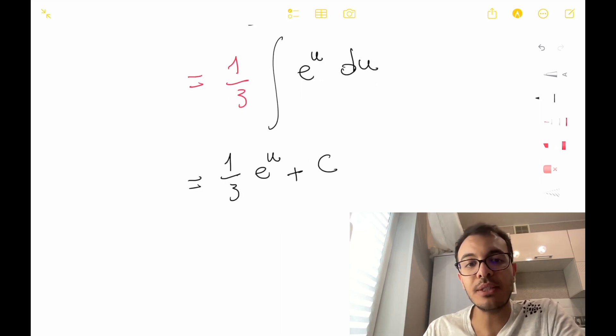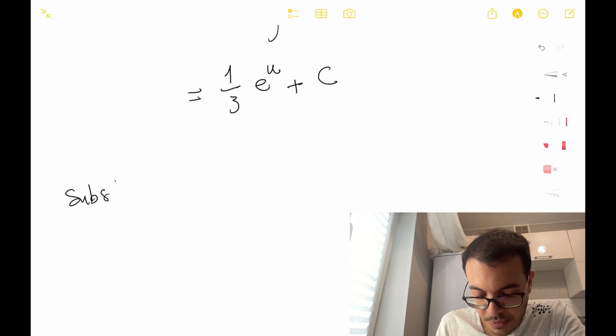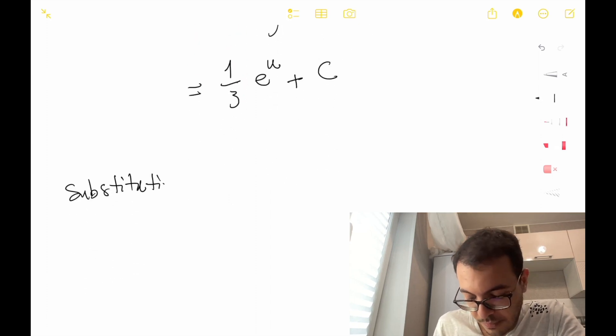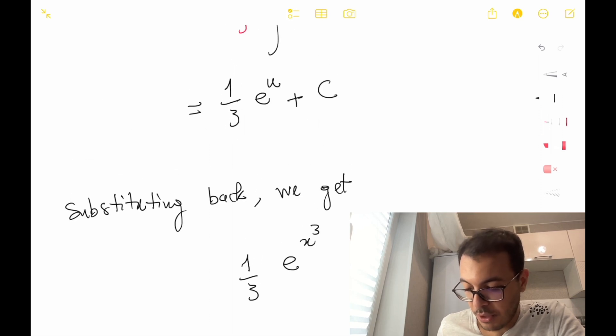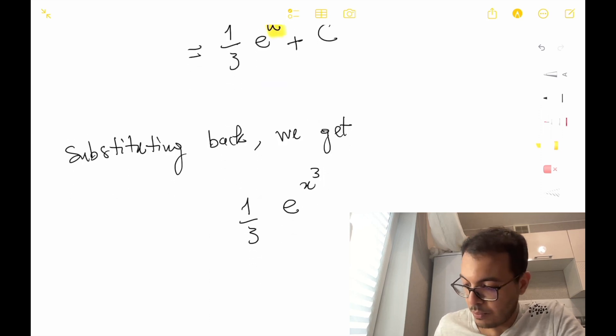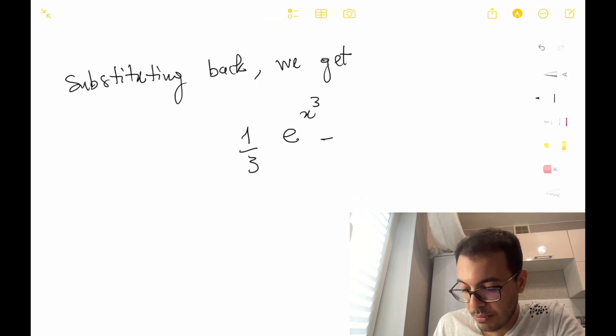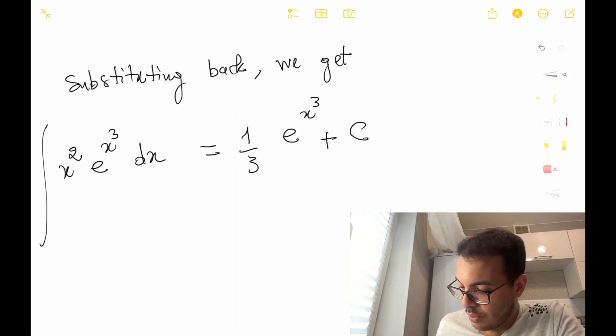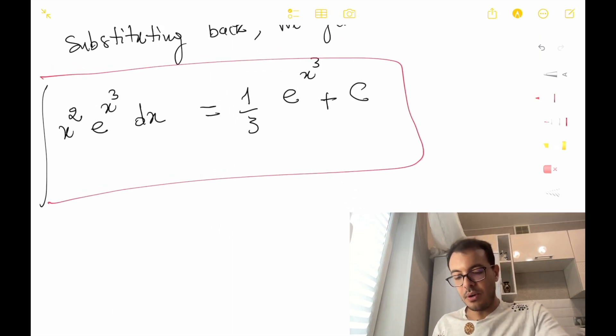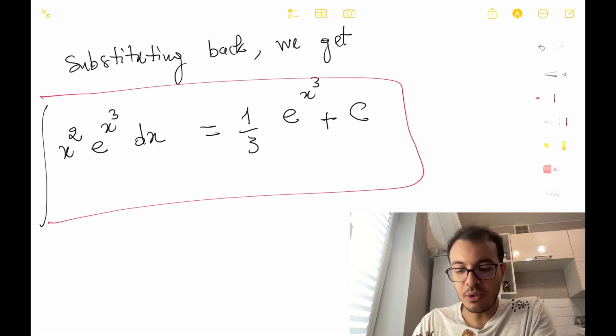However, we can't forget to substitute back the original variable x. Substituting back, we get 1 over 3 e to the x cubed. So this integral x squared times e to x cubed dx equals 1 over 3 e to x cubed plus c constant.